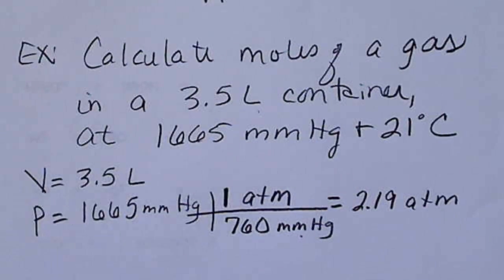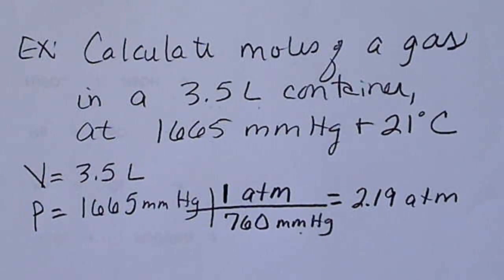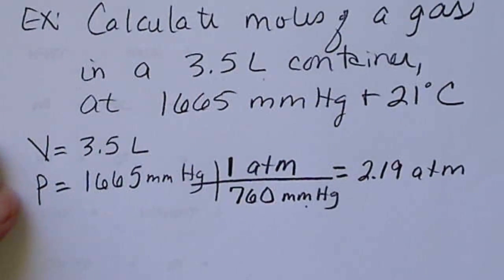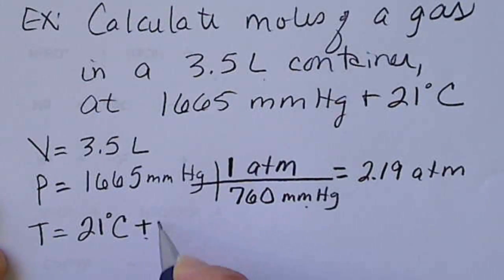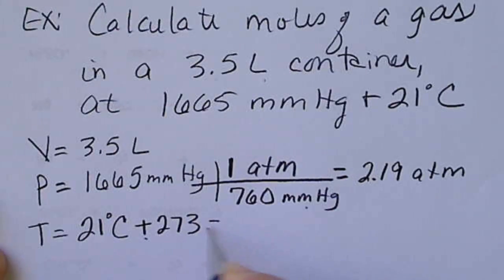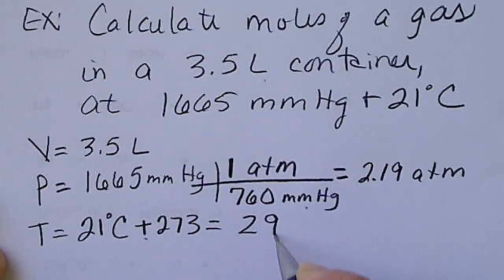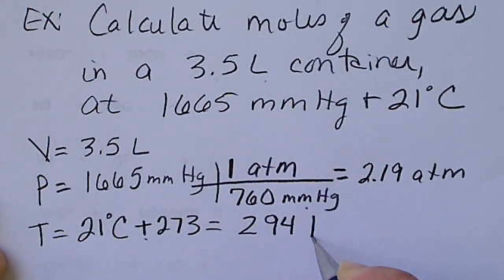So before we plug any values into the equation to solve for moles, we have to make sure that volume, pressure, and temperature are all in the correct units. So in order to change from degrees Celsius to Kelvin, we add 273. So this gives us 294 degrees Kelvin.